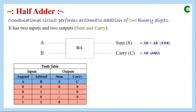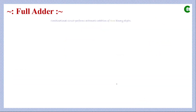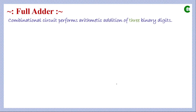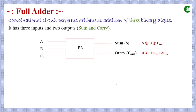Based on this truth table, the sum is the XOR gate between A and B, and carry is the AND operation between A and B. This is the logical circuit of a half adder where sum is the XOR operation of inputs A and B, and carry is the AND operation of inputs A and B. A full adder is a combinational circuit which performs arithmetic addition of three binary digits. It has three inputs and two outputs: sum and carry.